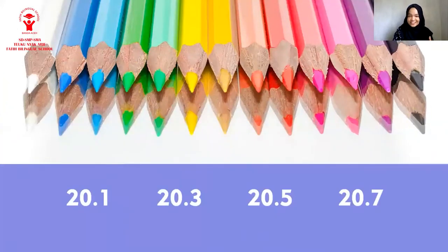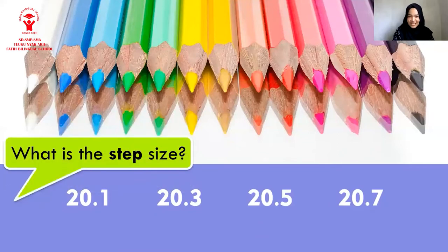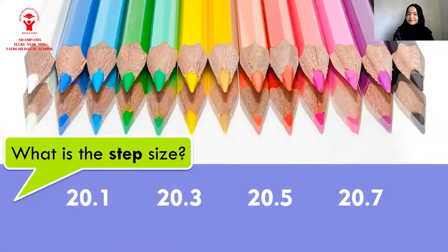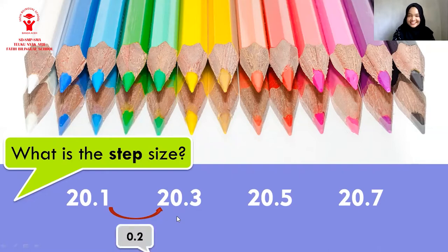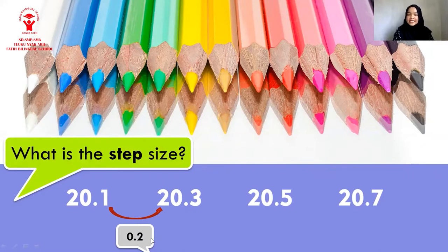Do you know what is the step size? What do you think the step size is? Yes, from 20.1 to 20.3, what is the step? That's correct: 0.2. So the step from the first term to the second term is 0.2. And it's also the same from the second to the third term or the third to the fourth term. The step size is 0.2.